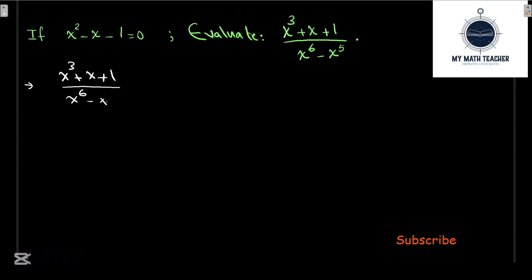From the given equation x² - x - 1 = 0, this implies x² = x + 1. So let's use this substitution.